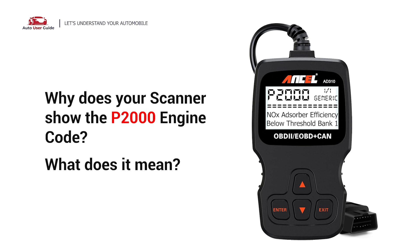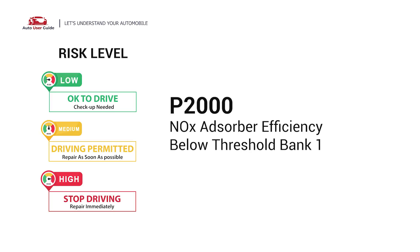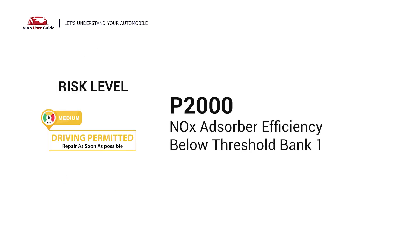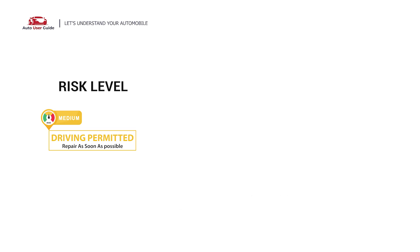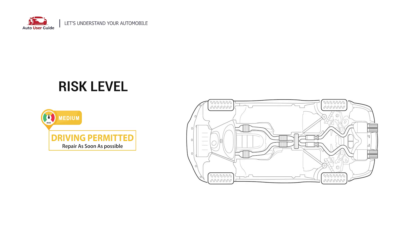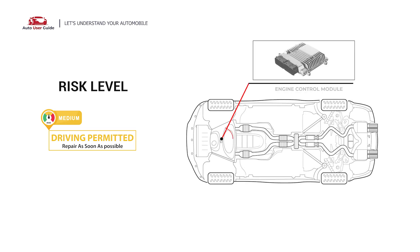Why does your scanner show the P2000 engine code and what does it mean? The P2000 engine error code stands for NOx Absorber Efficiency Below Threshold in Bank 1. This code indicates that the NOx trap in a vehicle's engine has a lower efficiency than expected for Bank 1.